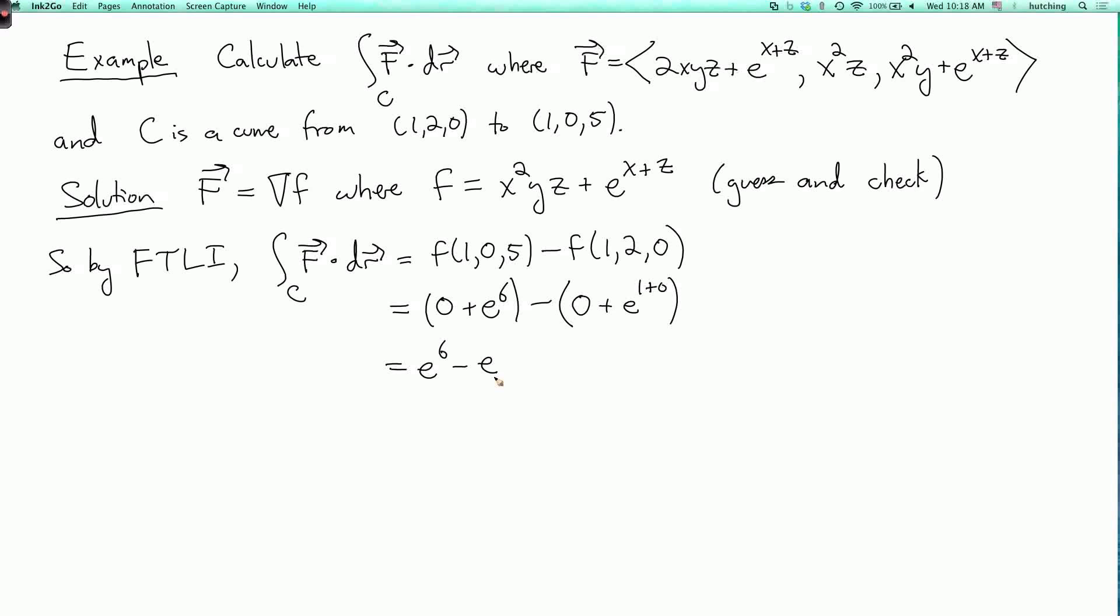Now you could alternatively pick a curve going between these two points and evaluate the integral, although that wouldn't prove that the answer is not going to depend on the curve. I mean, if you happen to know that the vector field is conservative, then you could pick any curve you like and evaluate the integral along that curve. Or if you know what the potential is, you can just do it this way using the fundamental theorem of line integrals.